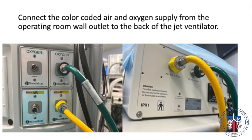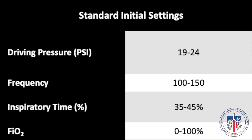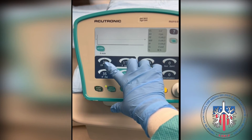Connect the color-coded air and oxygen supply from the operating room wall outlet to the back of the jet ventilator. Standard initial settings are a driving pressure of 19 to 24 psi, a frequency of 100 to 150, an inspiratory time of 35 to 45 percent, and an FiO2 of 100 percent.